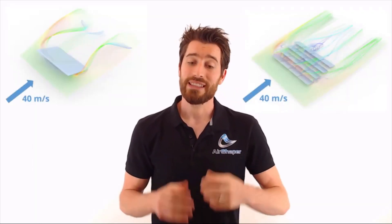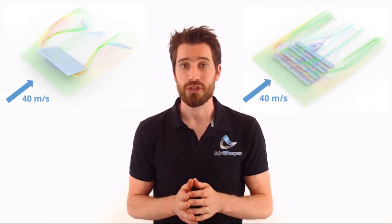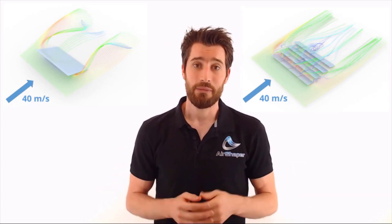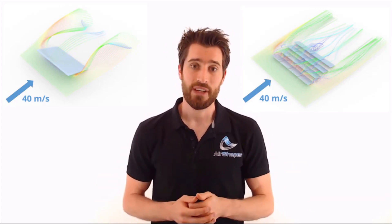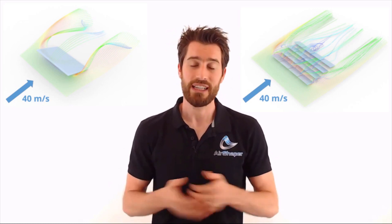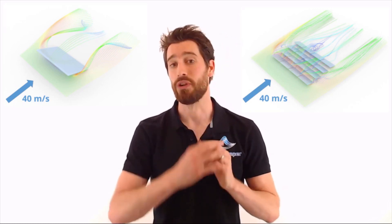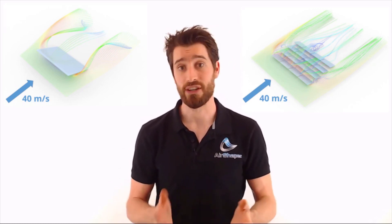Why? Well, the single panel had escape routes for the air on left and right, making it easier to escape. But when there's neighbors on left and right, the only way for the air is upwards, increasing the pressure buildup underneath the panel.